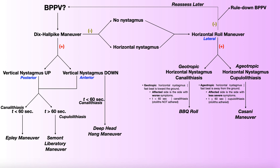Suppose you have a patient you suspect has BPPV based on subjective reports of dizziness, and they indicate that the room is spinning with a visual change. The first test you would do is the Dix-Hallpike maneuver. For it to be positive, you have to get reproduction of vertical nystagmus — either downbeating, implicating the anterior canal, or upbeating, implicating the posterior canal.